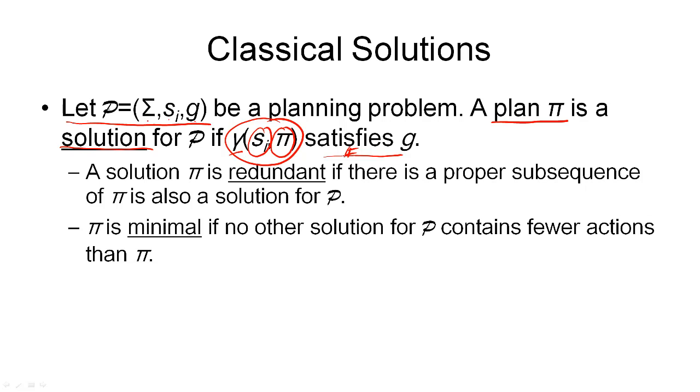Since there may be many plans that are solutions for planning problems, we want to distinguish those, and we can do that by defining some properties of these solution plans. We can say that a solution is redundant if there is a proper subsequence of this plan that is also a solution for P. So, if we can take our plan pi, remove some of the actions, and still have a solution plan, then we call the original plan redundant.